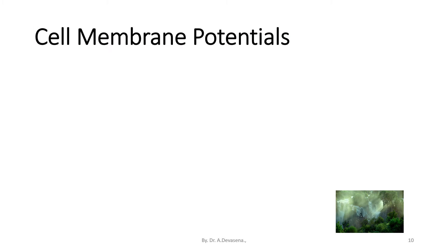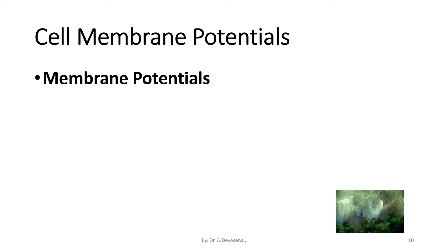Cell membrane potentials: cell membranes in general, and membranes of nerve cells in particular, maintain a small voltage or potential across the membrane in its normal or resting state. In the resting state, the inside of the nerve cell membrane is negative with respect to the outside. Typically, its value is about minus 70 mV.